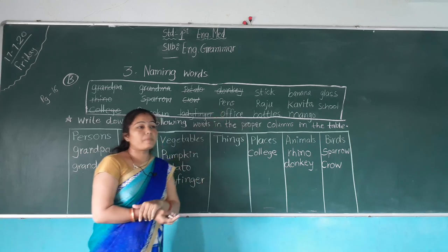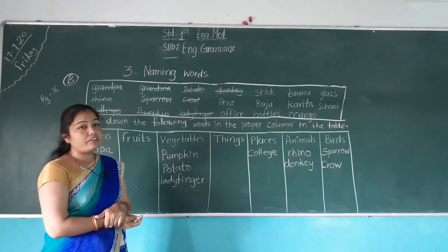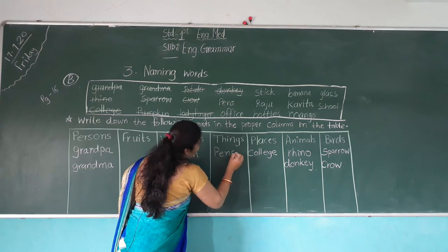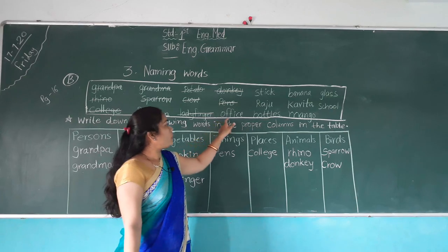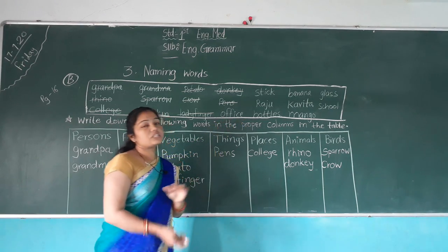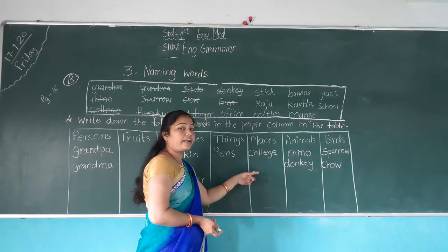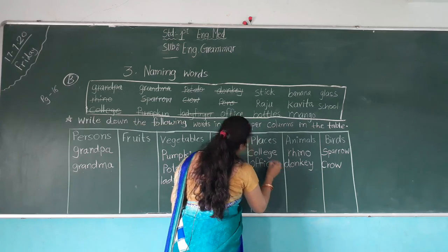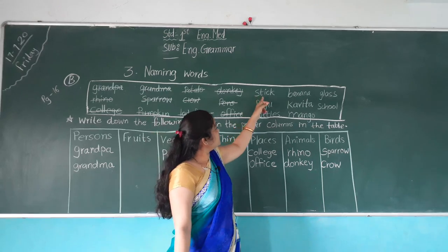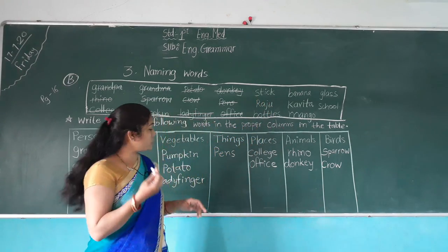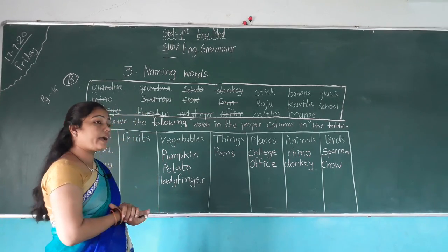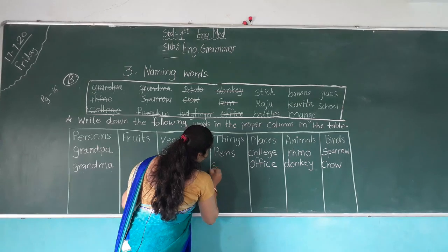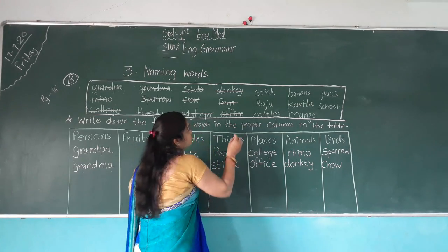P-E-N-S — Pens. Pens is the name of a thing, so where do we write it? In the things column — P-E-N-S. Next — O-F-F-I-C-E — Office. Office is the name of a place, so we write it in the places column. Next — S-T-I-C-K — Stick. Stick means a piece of wood — it is a name of a thing — so we write it in the things column.